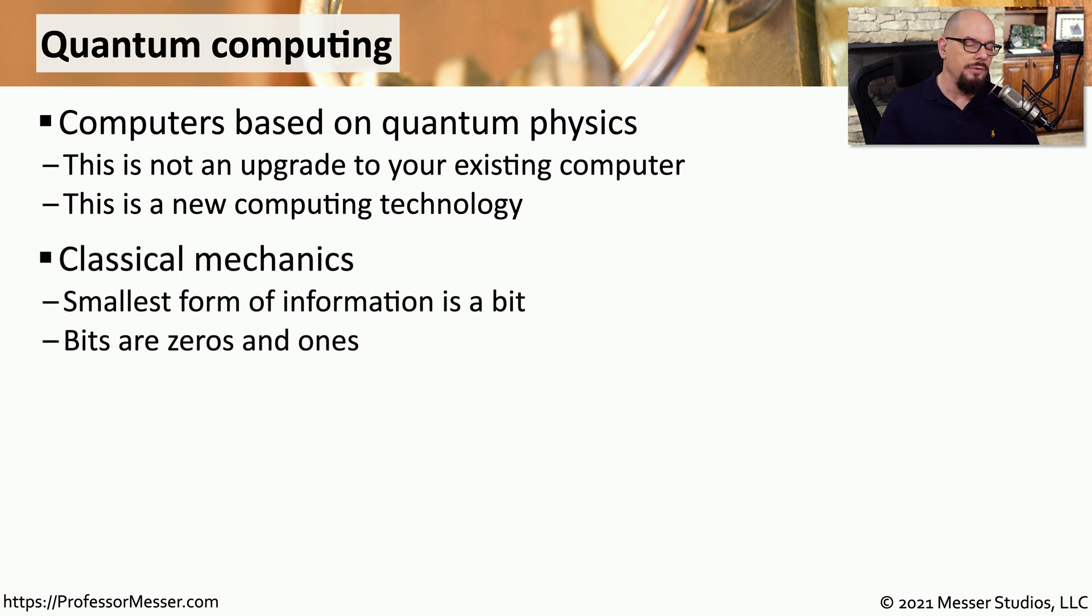With our traditional computers, we use classical mechanics, which uses bits. Those bits are zeros and ones. And we can apply algorithms towards those ones and zeros to come up with a solution to a particular problem.